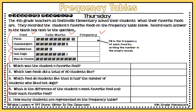A strategy I tell my students is to go ahead and fill in the frequency table before you start answering the questions — everything will move a lot faster and you won't have to go back and forth as much. So: 44 students liked pizza, 37 liked hamburgers, 18 liked sandwiches, 36 liked hot dogs, and 50 liked mac and cheese. Now with my frequency table filled in, I'm ready to answer the questions.